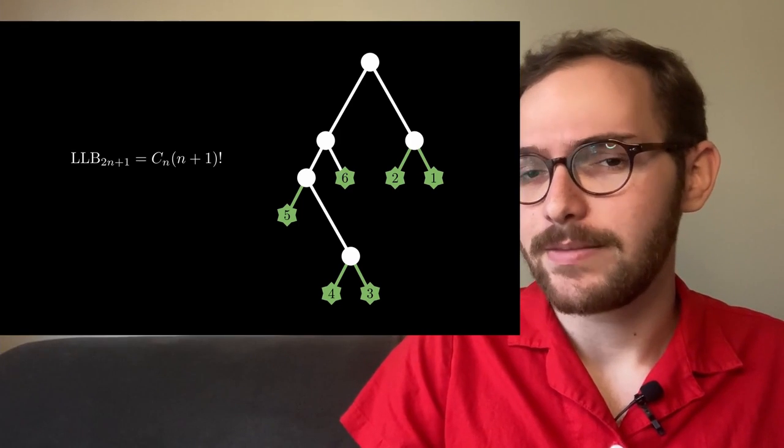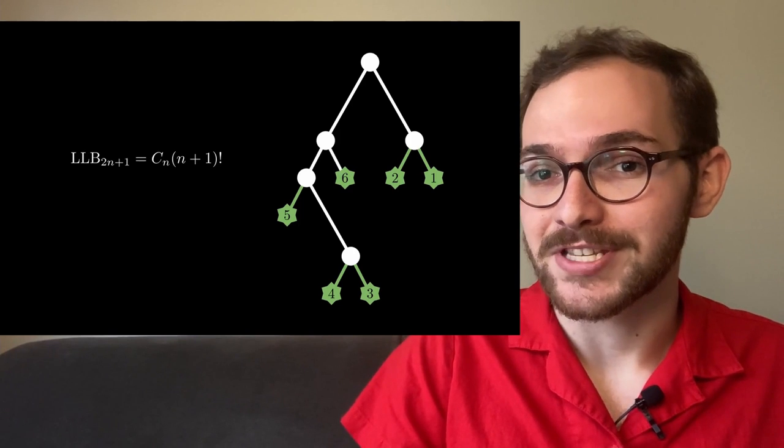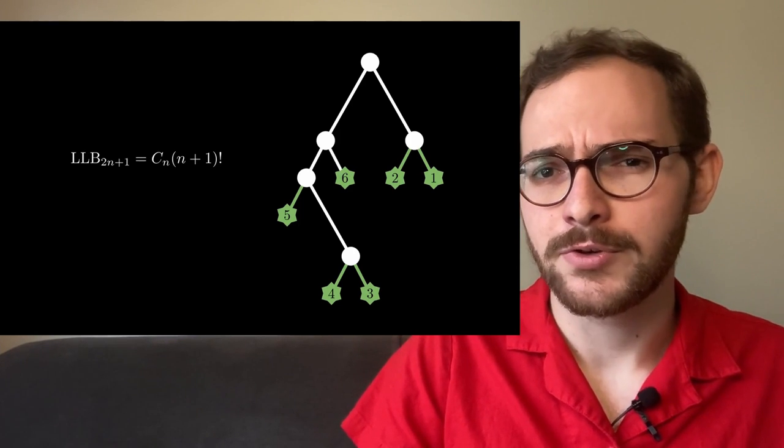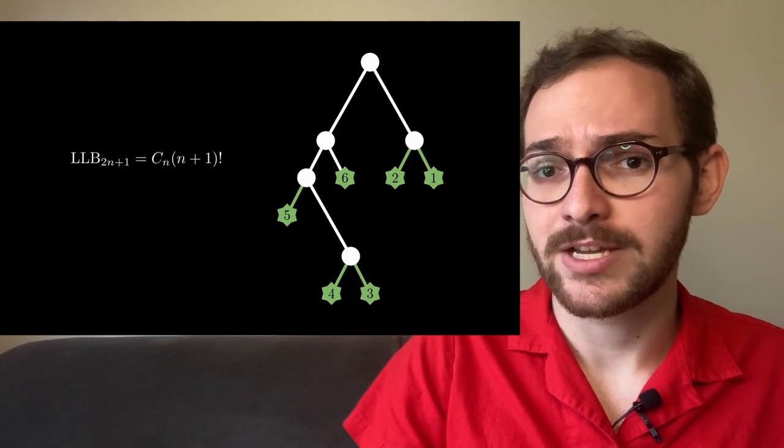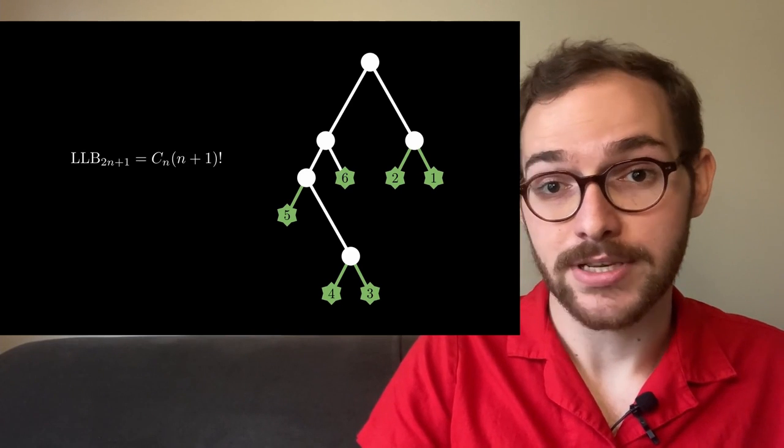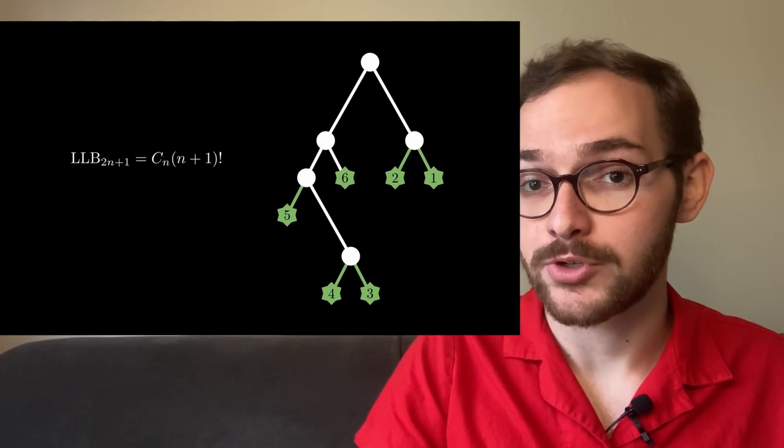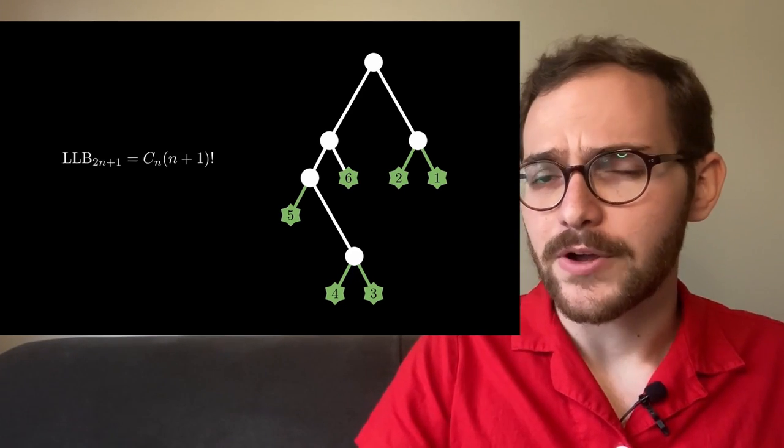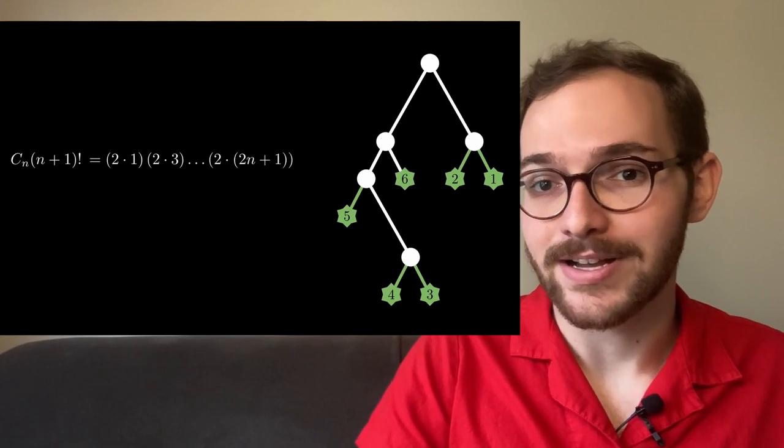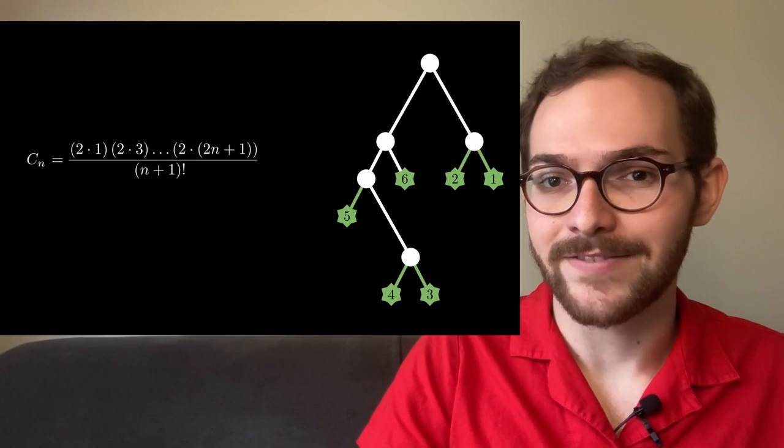So all we have to do is count how many ways you can build a sequence on a tree with 2n+1 nodes. We choose a node and a direction, left or right, giving us 2×(2n+1) choices. Then there are 2×1×2×3×2×5, etc., total LLBs. And dividing by (n+1)!, we recover the formula for the Catalan numbers.